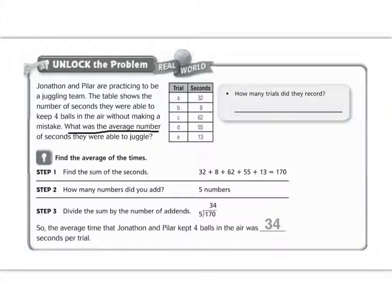So let's look here at the box before we begin. It says that we are going to ask how many trials did they record? We look in the trials. We have 1, 2, 3, 4, 5. They had 5 trials.